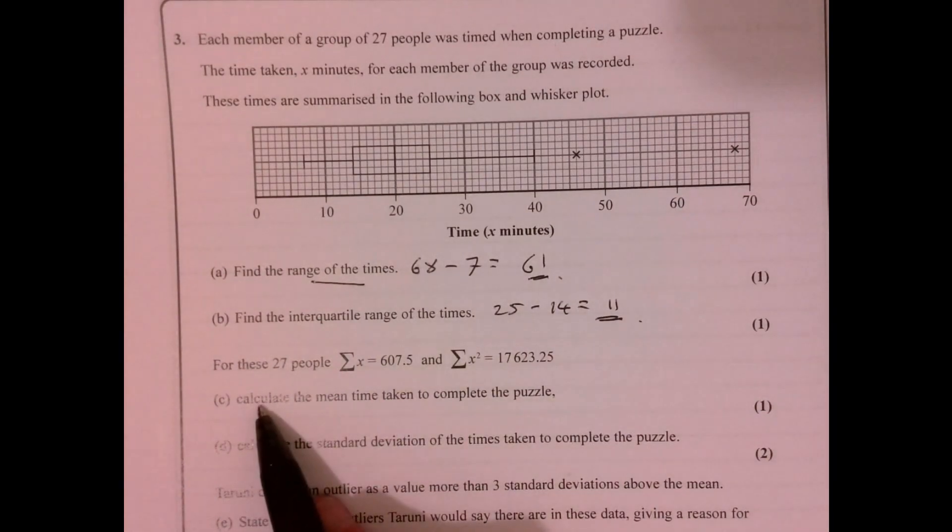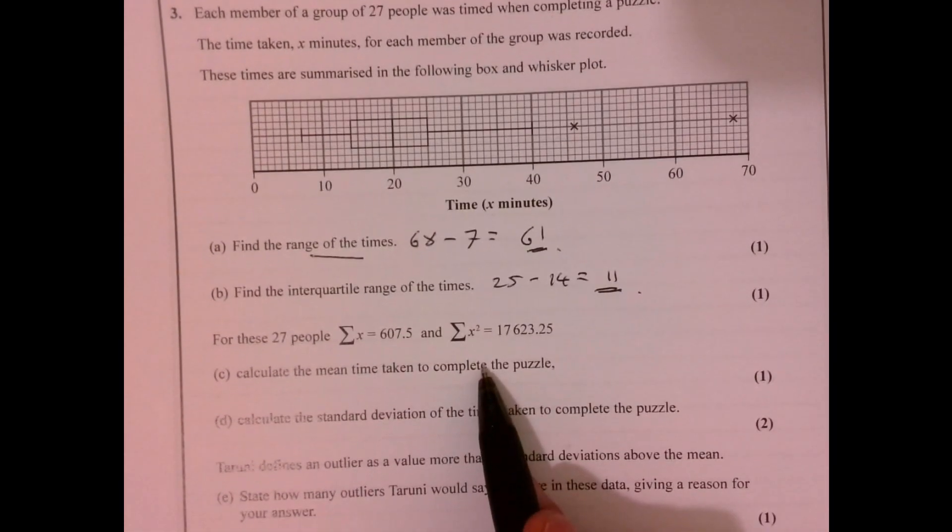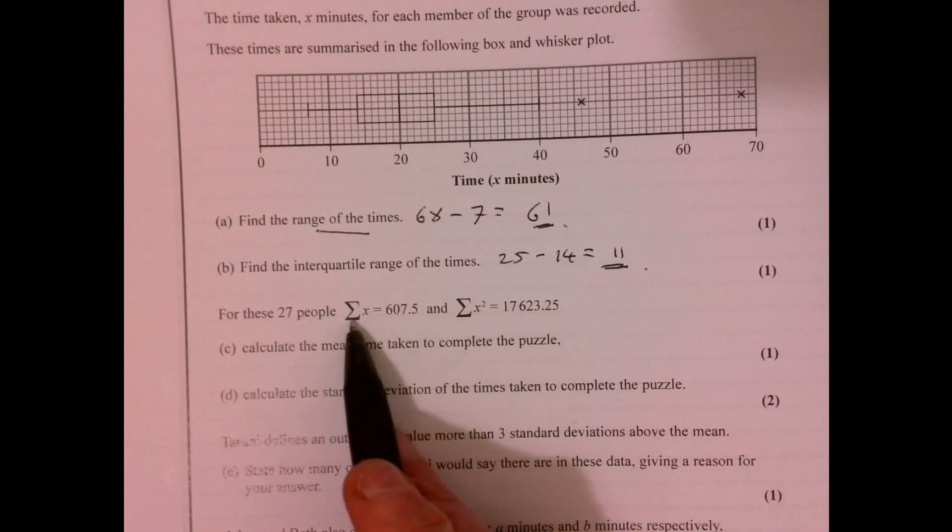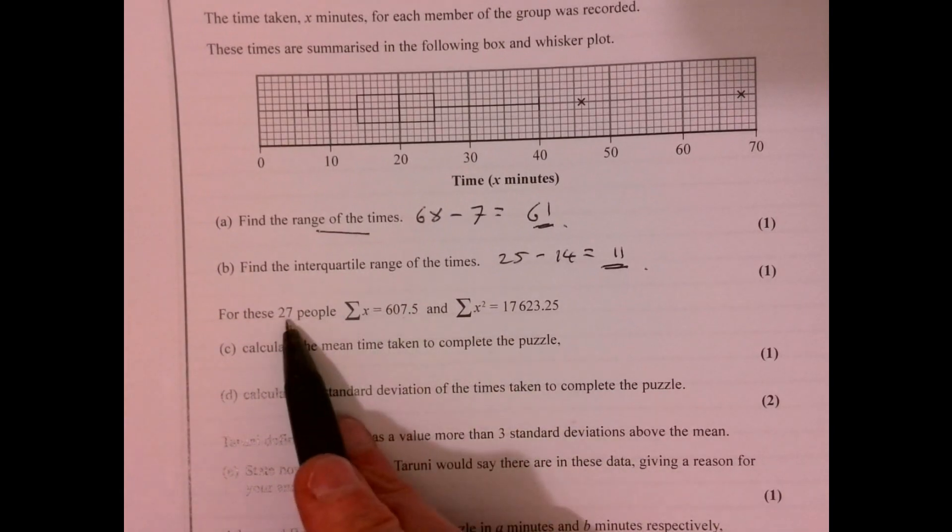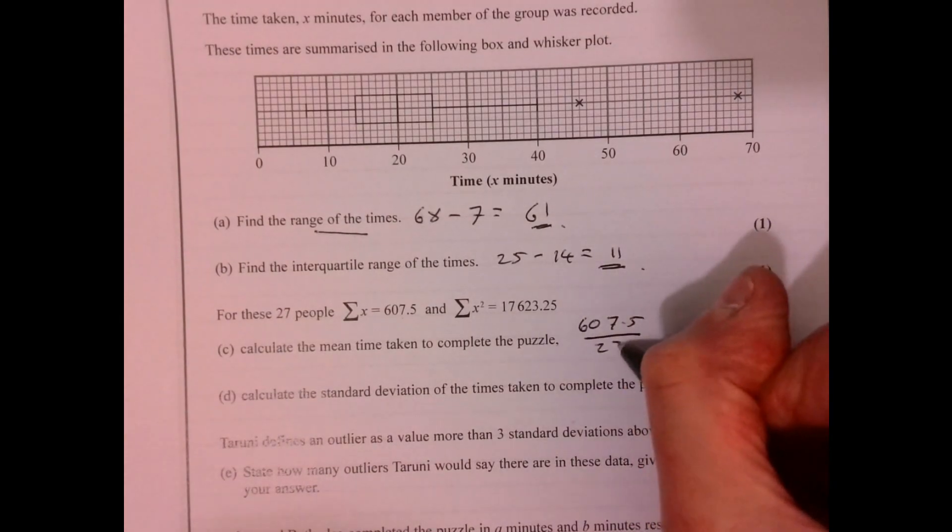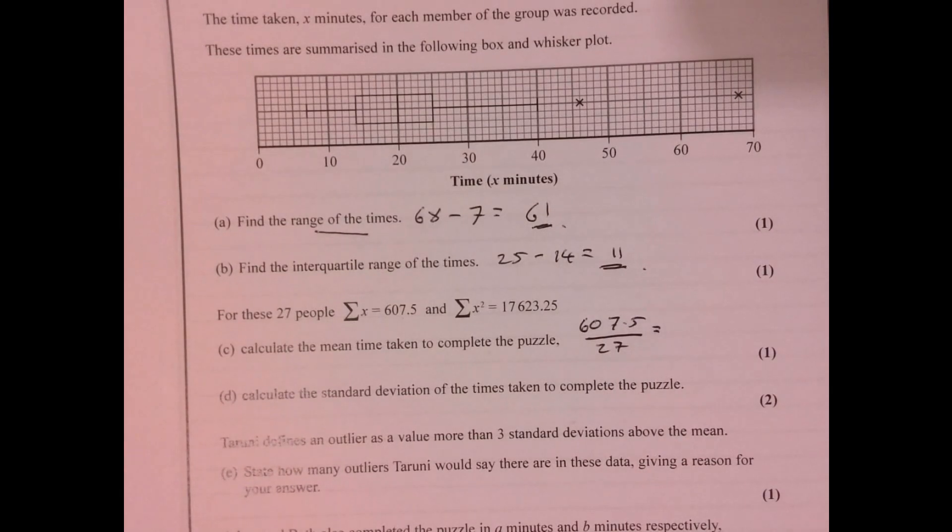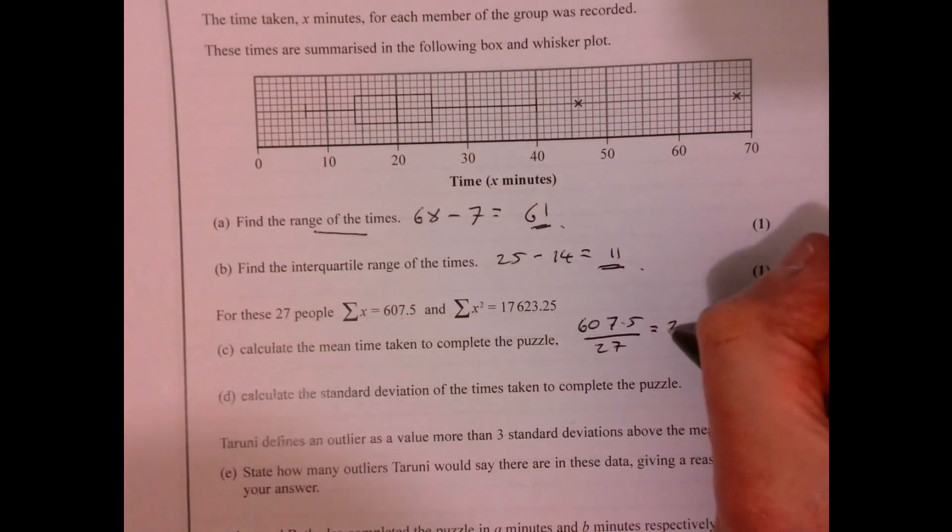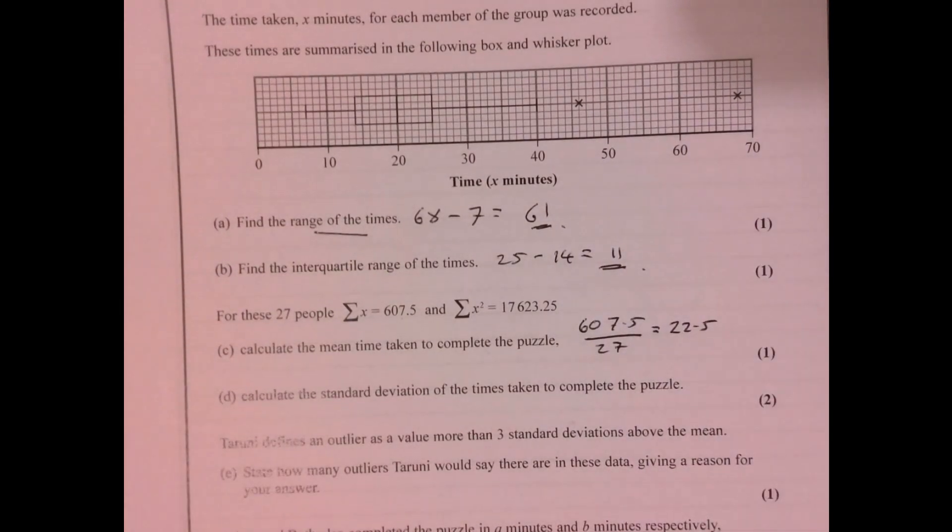Part C, calculate the mean time taken to complete the puzzle. So that's the sum of x, so it's this number, divided by 27, so we've got 27 people. So we just work that value out. So that's going to give us 22.5.